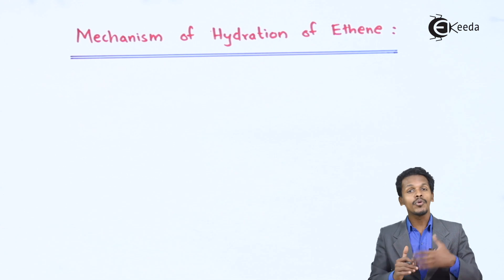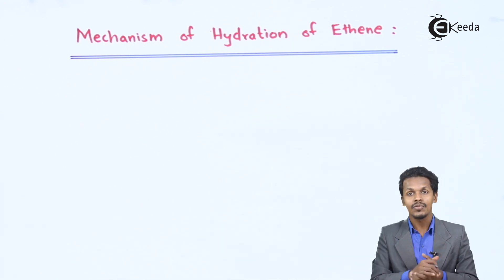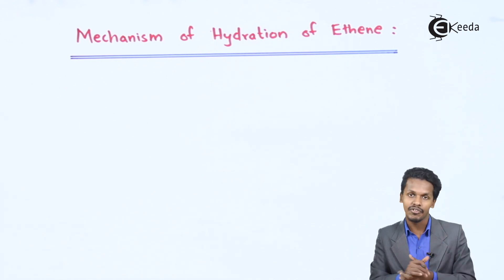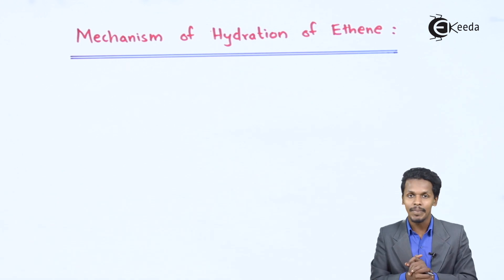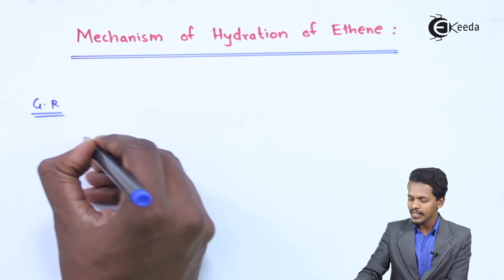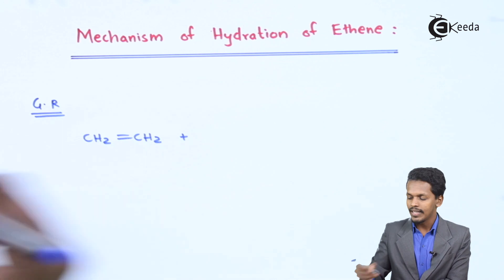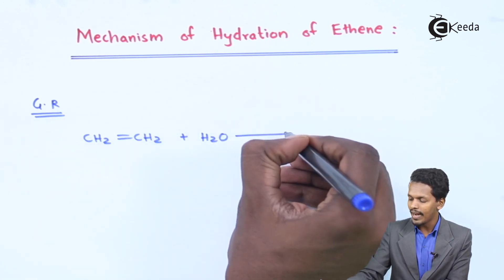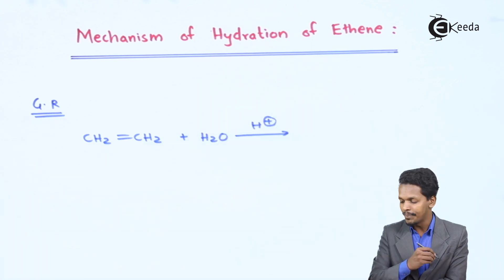In this topic we are going to talk about the mechanism of hydration of ethylene. Let us understand what product we obtain when ethylene undergoes a hydration process. Let me give you the general reaction first and then we will move on to the mechanism. The general reaction is simple: suppose we have ethylene, that is CH2=CH2, and we do hydration by treating it with water in the presence of an acid, H+, which could be H2SO4.